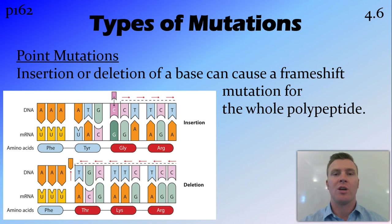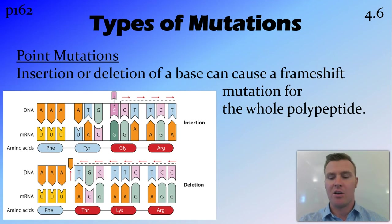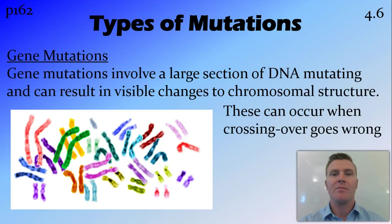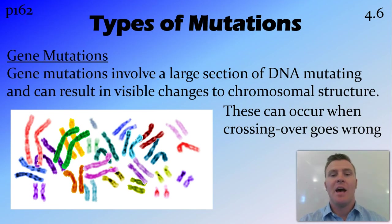This is called a frameshift mutation, in that it changes the way each of those three-base codons work by pushing each base pair into the next codon — this can really mess things up. A gene mutation occurs when a large section of DNA mutates.